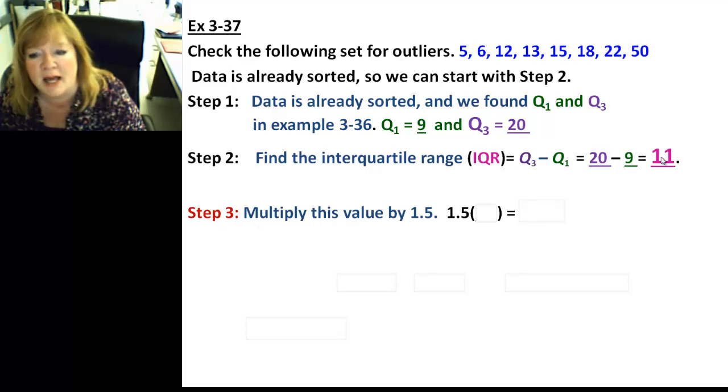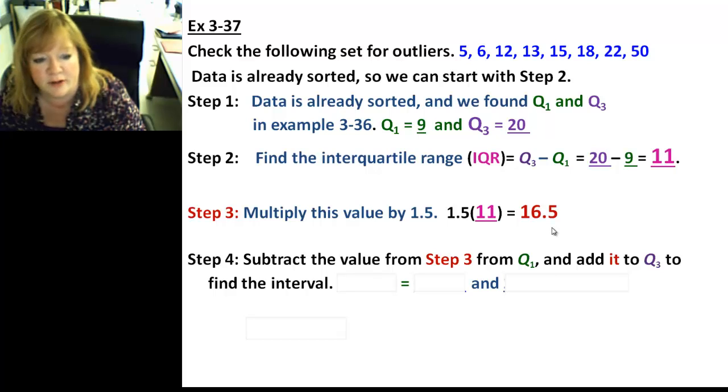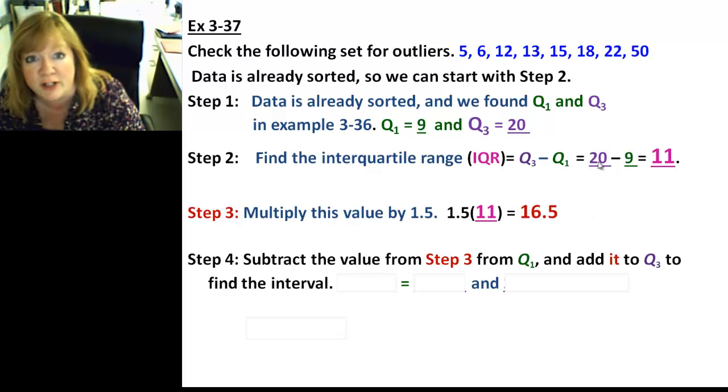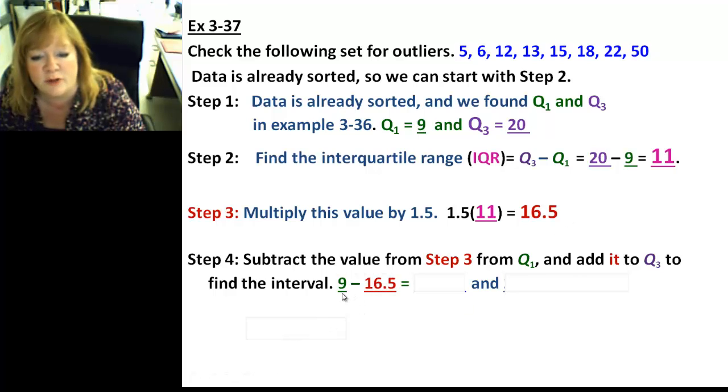Step 3, multiply 11, which is our interquartile range, or IQR, by 1.5. So, if we take 1.5 times 11, remember you keep the first and last number and add them together to get the middle number. So, you know you're going to have 165. One decimal place makes it 16.5. And step 4, we're going to subtract the value from step 3. That's this 16.5 from quartile 1 and add it to quartile 3, which is purple. This is all color coordinated. I did that just for you guys. So, the first part would be 9, which is Q1, minus that guy, 16.5, the IQR. That's going to give us negative 7.5. Negative numbers need love too. And, you're going to have to add it to Q3. So, we're going to have 20, which is our Q3, plus 16.5 to give us 36.5.